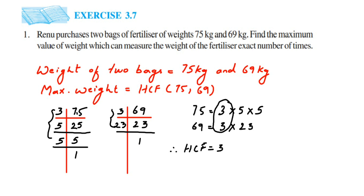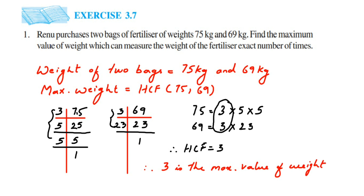Therefore, 3 is the maximum value of weight which can measure the weight of the fertilizer an exact number of times. That's it! I hope it's clear. In case you have any other question or doubt, you can drop a comment. Thanks so much for watching!